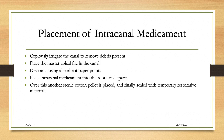Placement of intracanal medicament: copiously irrigate the canal to remove debris once cleaning and shaping is completed. Use the master apical file to check the patency of the canal. Dry the canal using absorbent paper points. Introduce the intracanal medicament using a lentulo spiral if using powder and liquid, or use a reamer to insert the material. If using a ready-made syringe such as Calcicure, insert the needle into the canal, inject slowly, and once overflow occurs, place a small cotton pellet on top of the pulp chamber, then place a temporary filling.